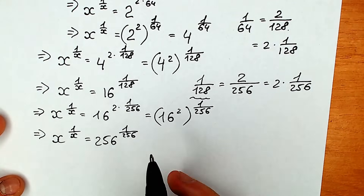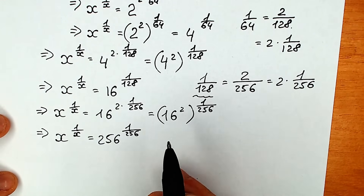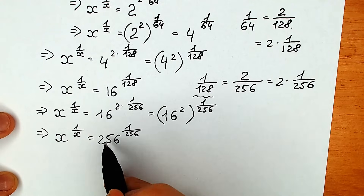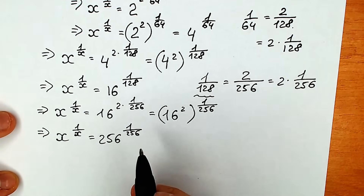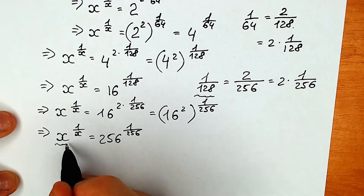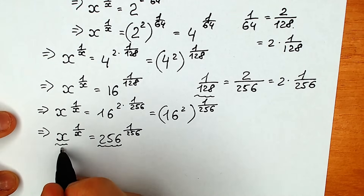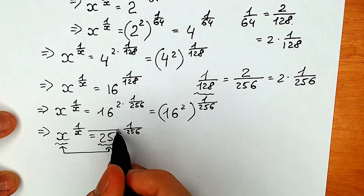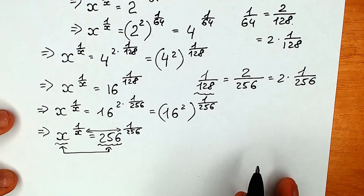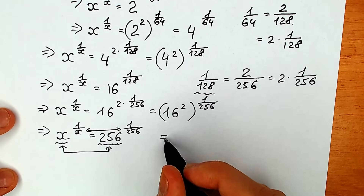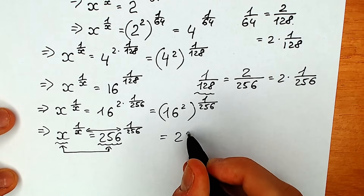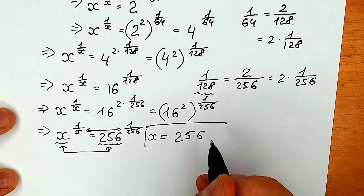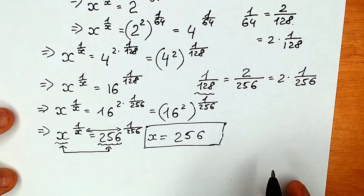If you look closely, both sides have exactly the same structure: a base raised to 1 over itself. We have x to the power 1 over x on the left, and 256 to the power 1 over 256 on the right. The bases must be equal, so x equals 256.